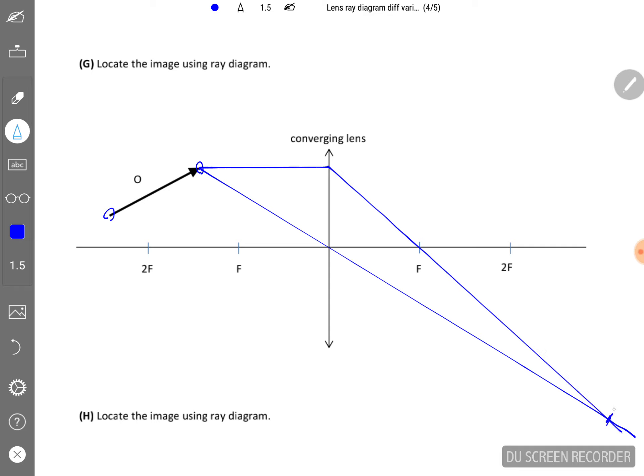So this intersection here will be the tip of the image. Next, you do the same for the other point here. So I start with the optical center, then the ray parallel to the principal axis passes through the F.